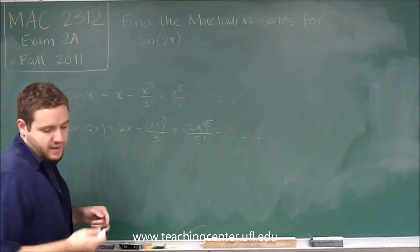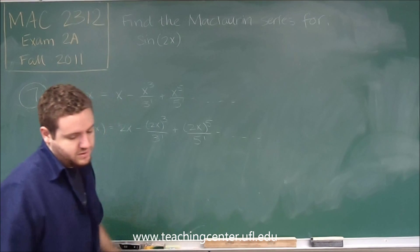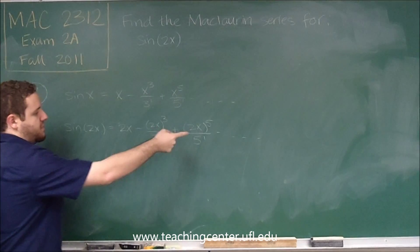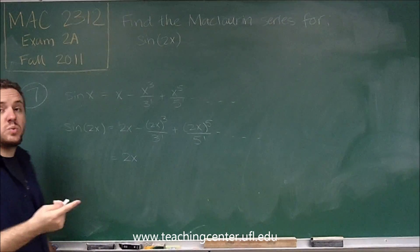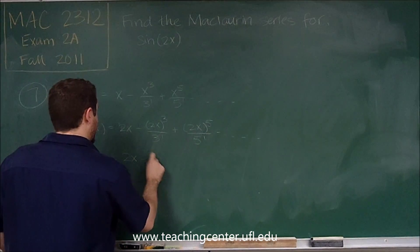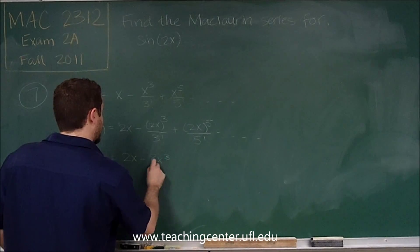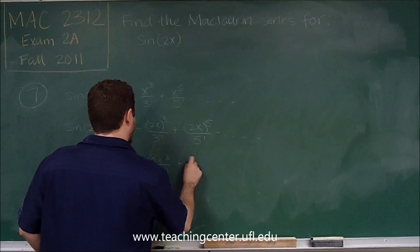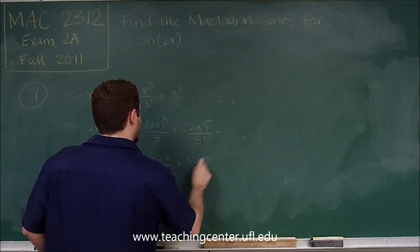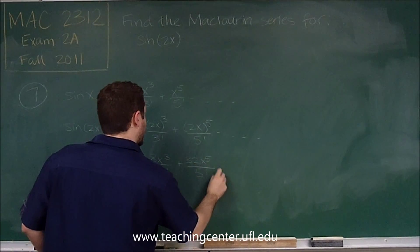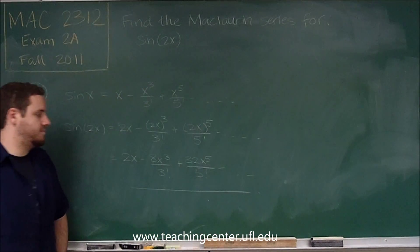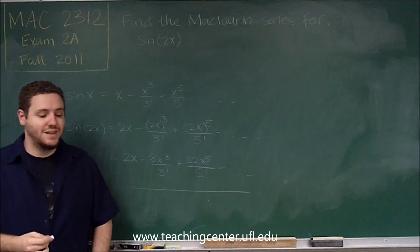So to make that look like the correct answer on the answer key, which is B, we can just expand those couple of things. So 2x quantity cubed is 8x cubed, and 2x to the fifth would be 32x to the fifth. And there we have our answer, which is answer choice B.